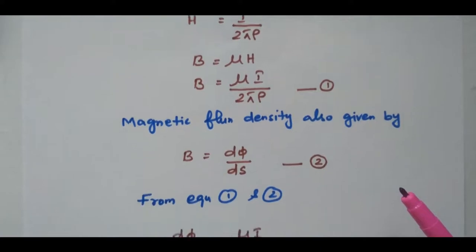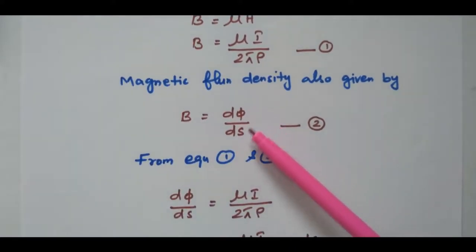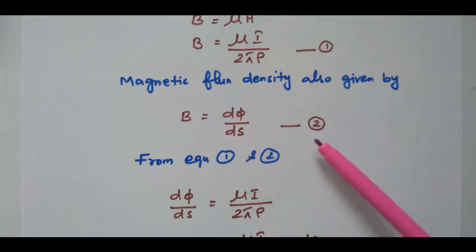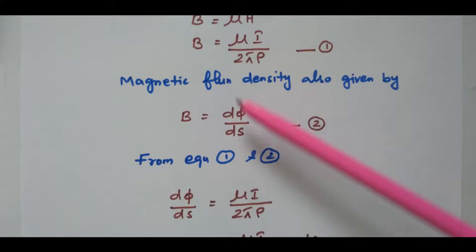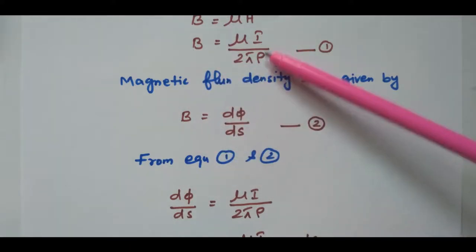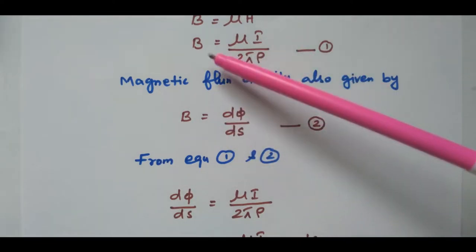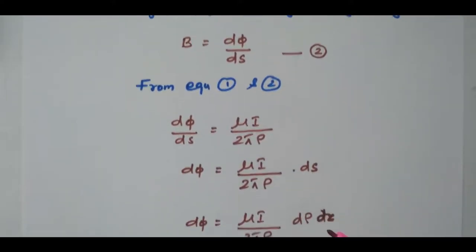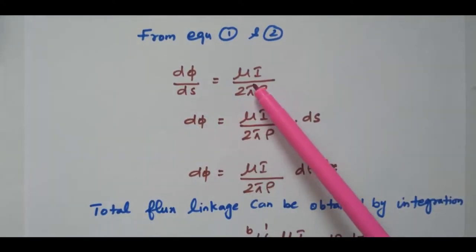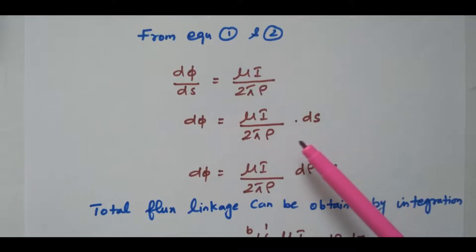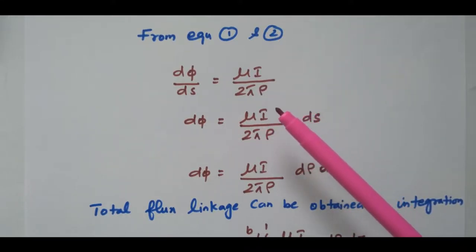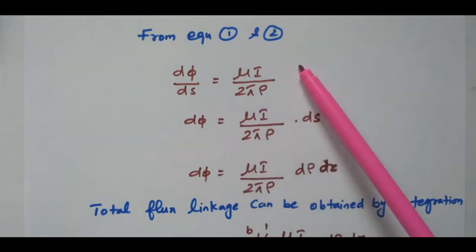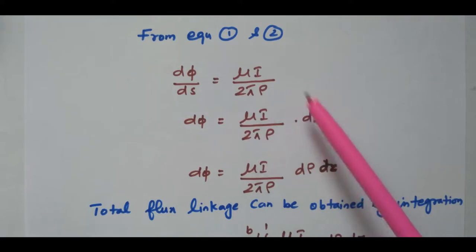In general, magnetic flux density is given as dφ by dS — that is flux per unit area — which is equation number 2. Since both left-hand sides are equal, we equate the right-hand sides from equations 1 and 2: dφ by dS equals μI divided by 2πρ. Therefore dφ equals μI divided by 2πρ times dS.